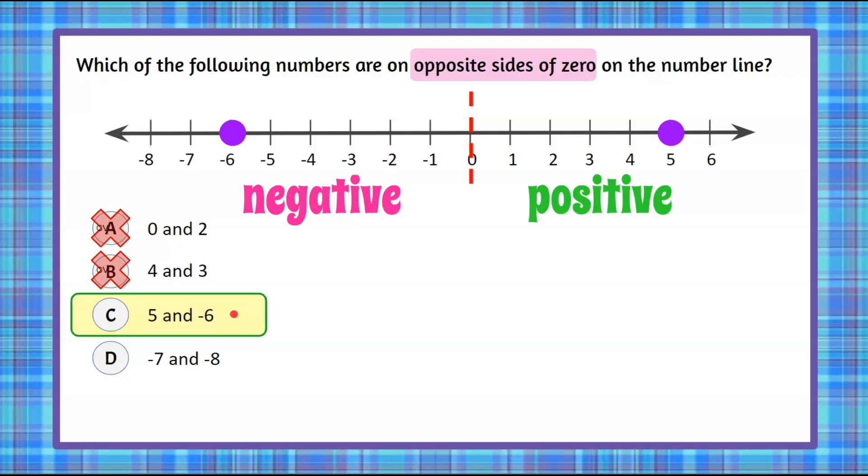We're going to consider the values negative seven and negative eight. When we plot negative seven and negative eight, we can see that they are both on the negative side of zero.